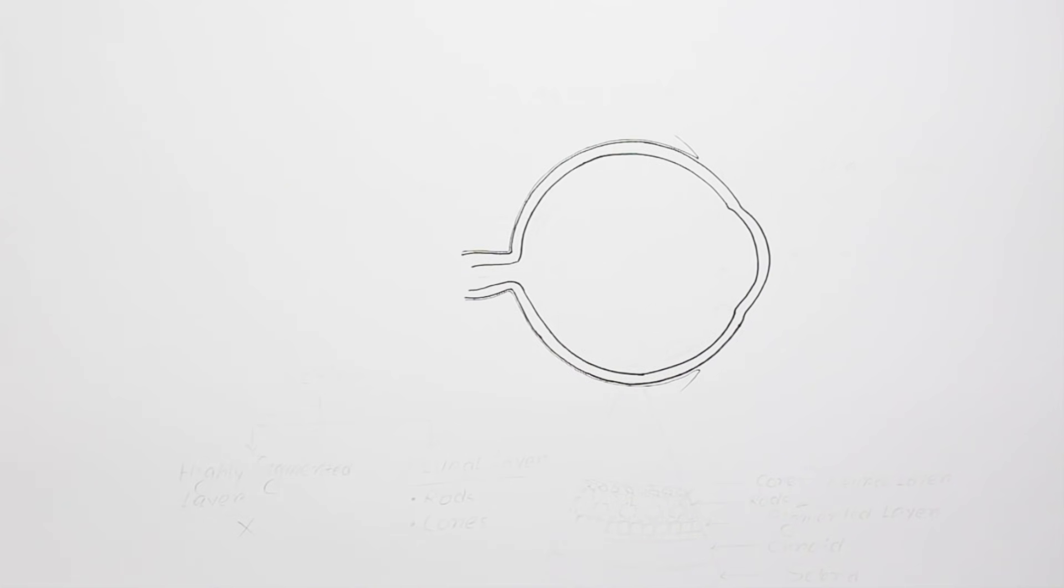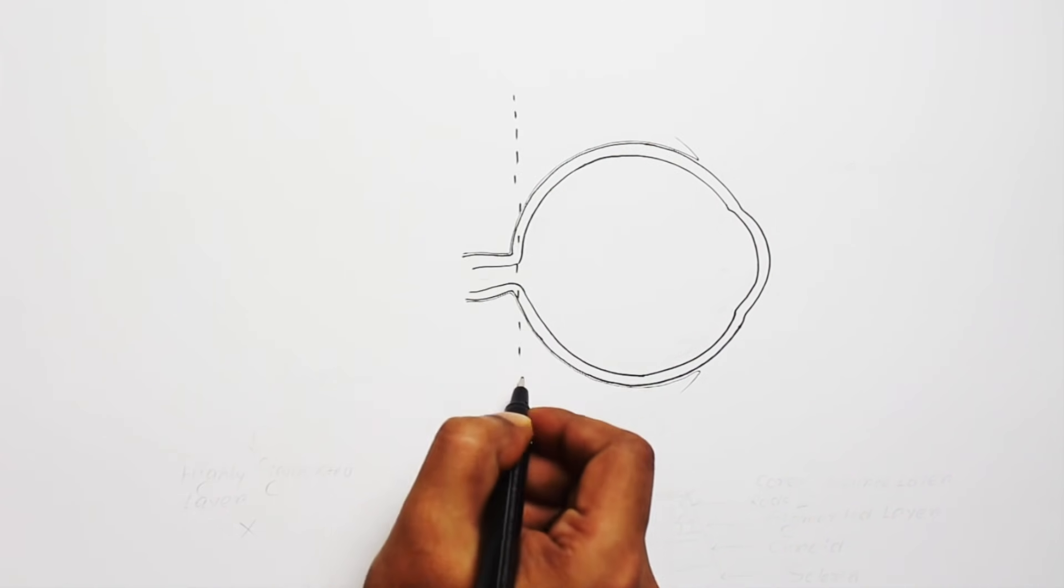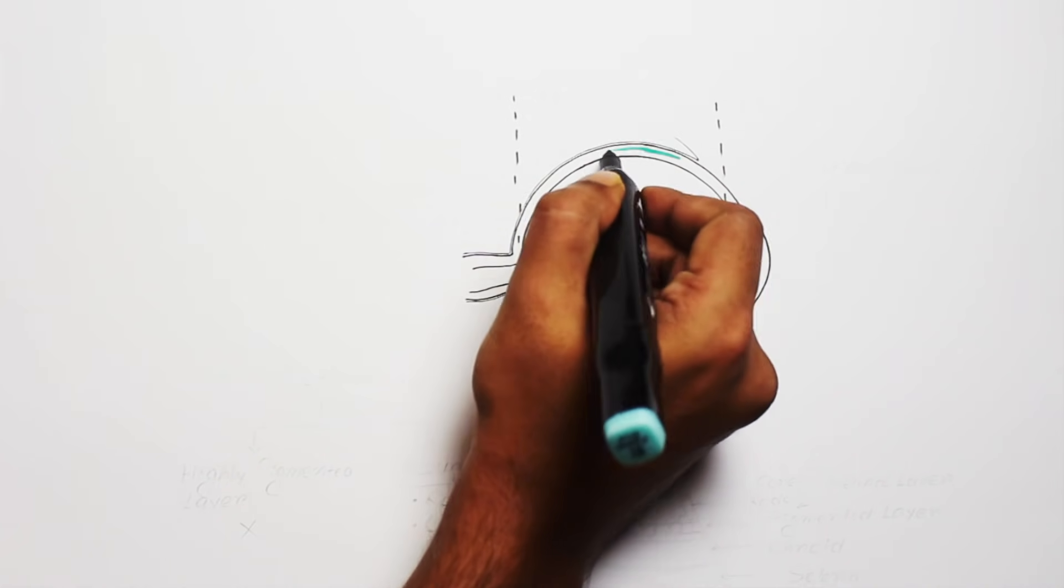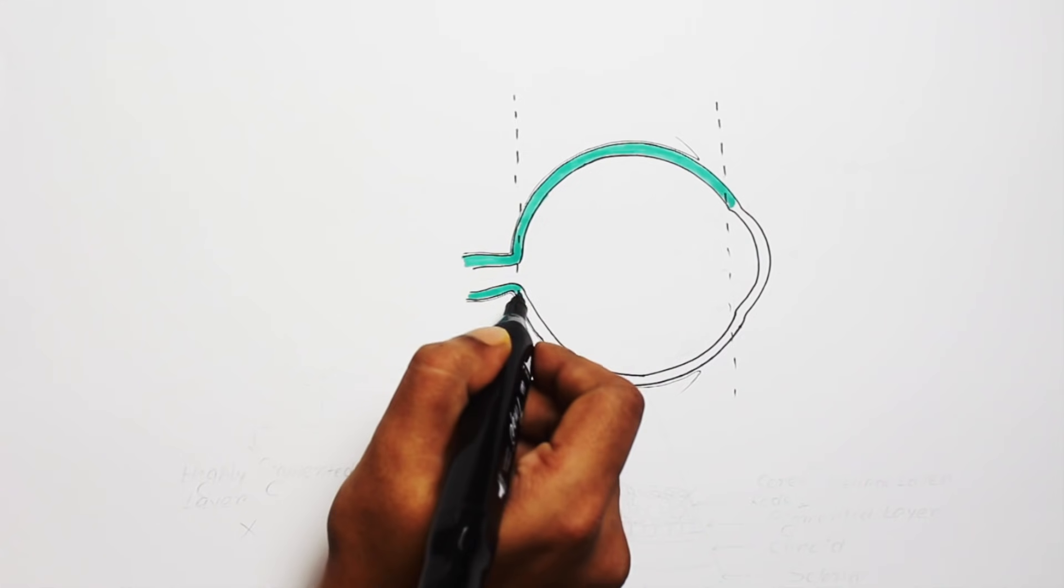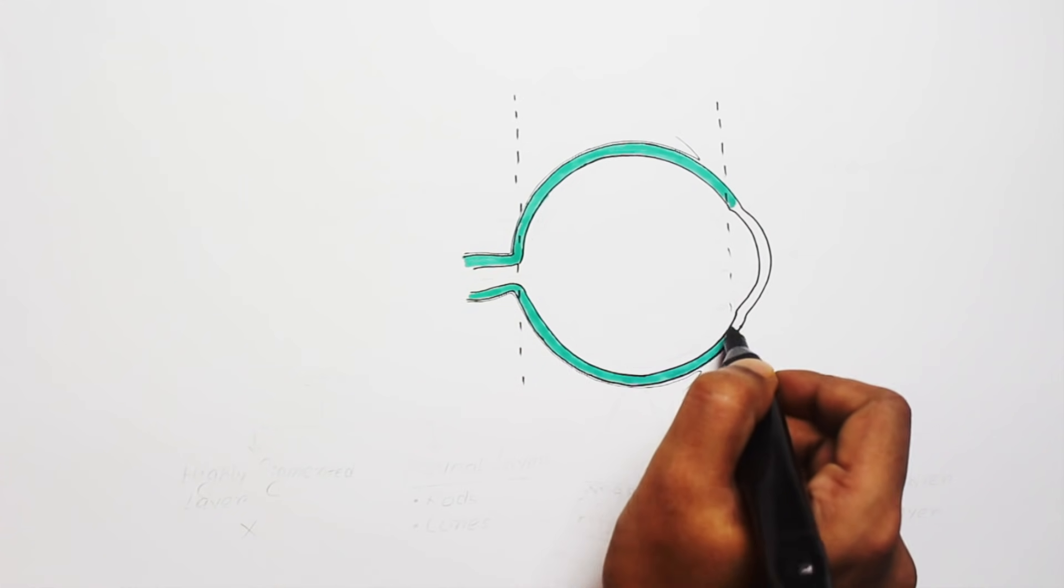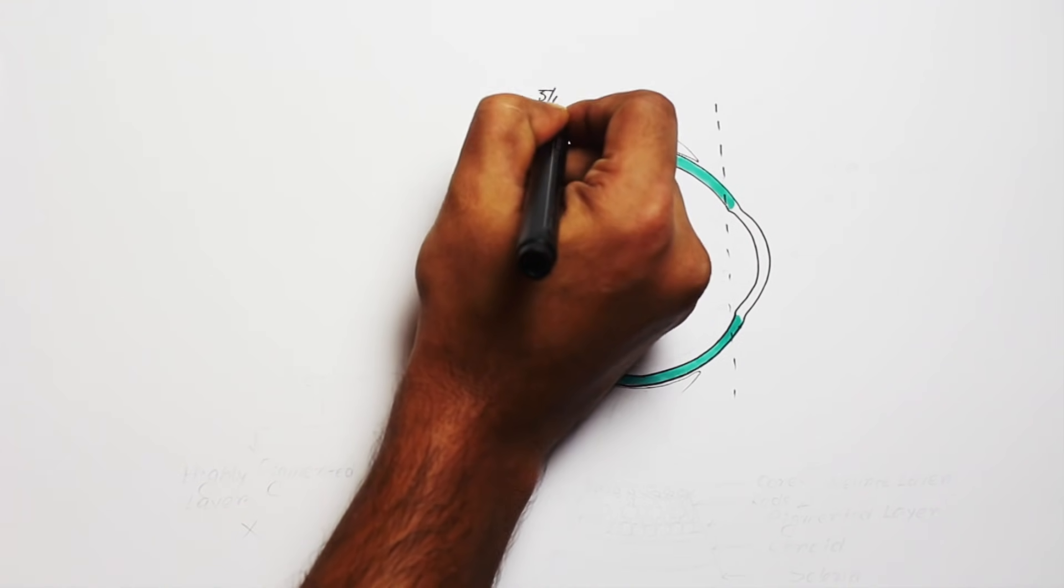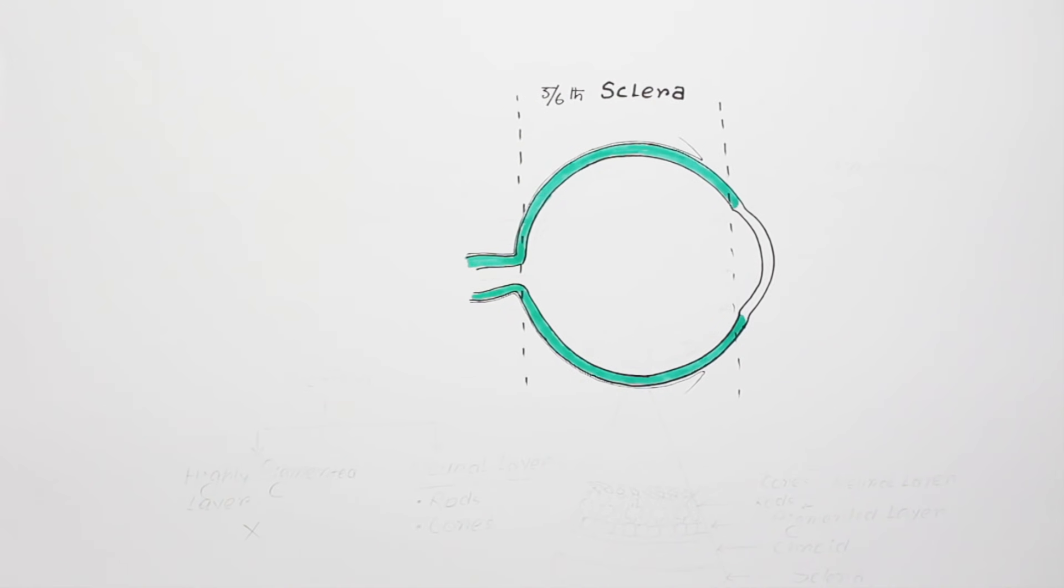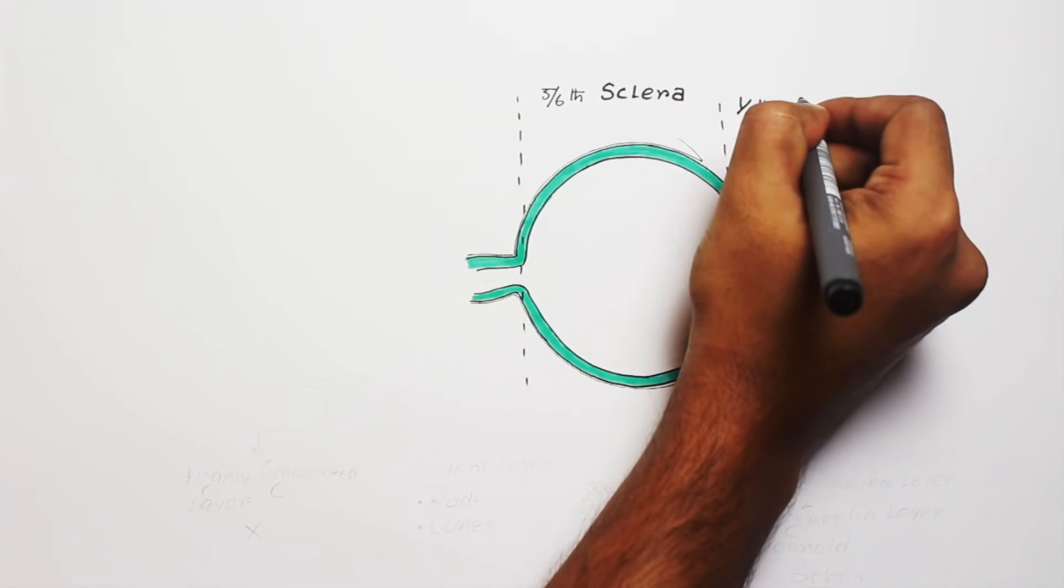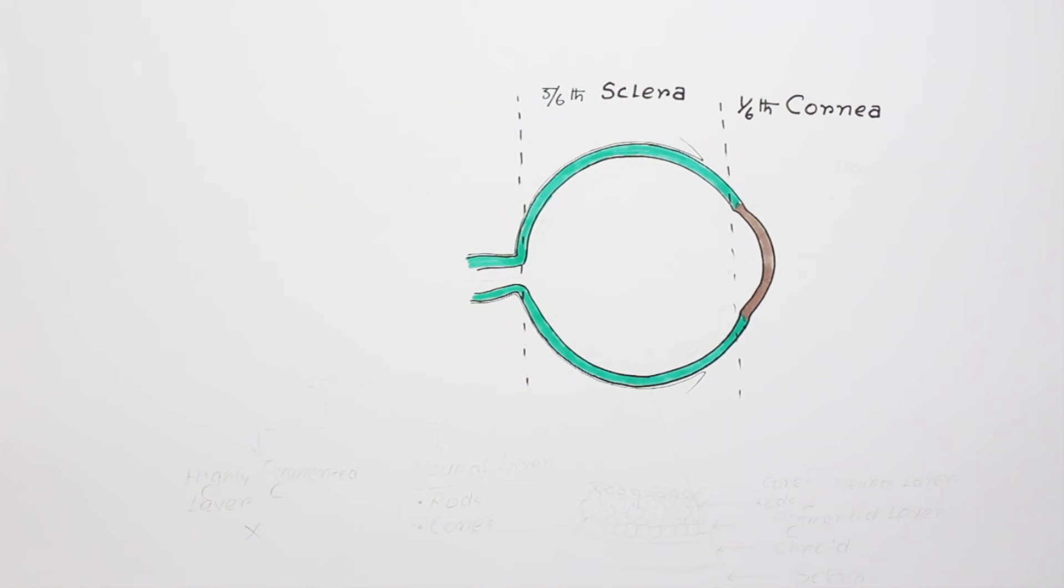Here in this diagram, this total part is the outer layer. The posterior 5/6th part, from this portion to this portion, all this layer is called sclera, which is a very tough membrane. Here, this transparent anterior 1/6th part is called cornea.